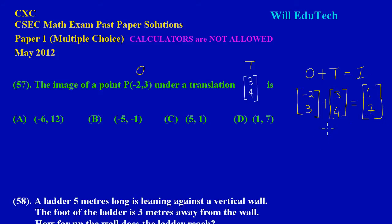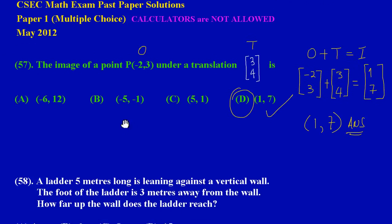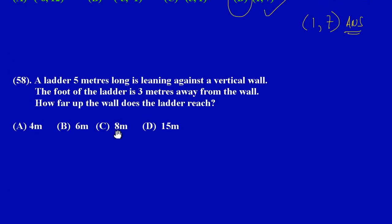Here we have it, our image point would be (1,7). Remember this should be written in coordinate form, so in coordinate form you would have positive 1 comma 7, because we are working out a coordinate. If you notice carefully, that would be our option D.